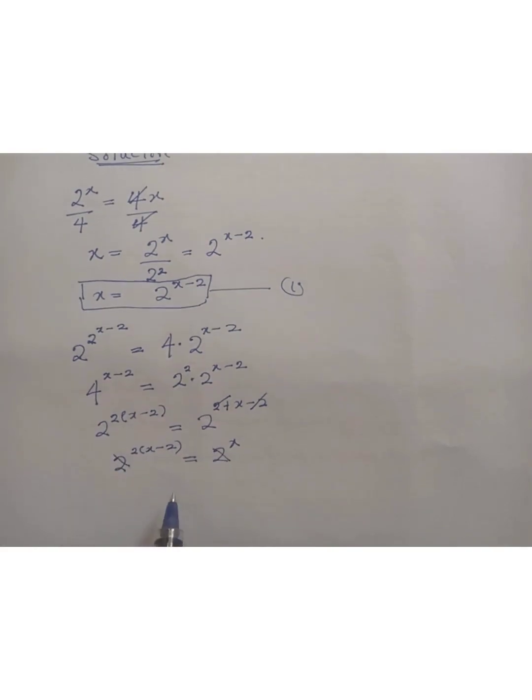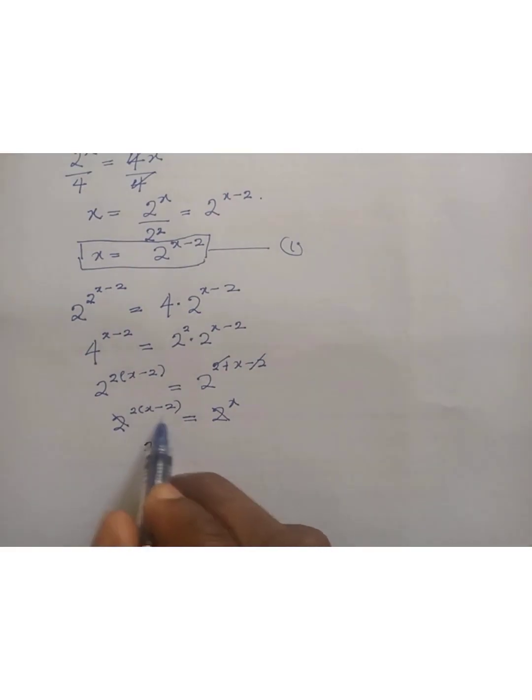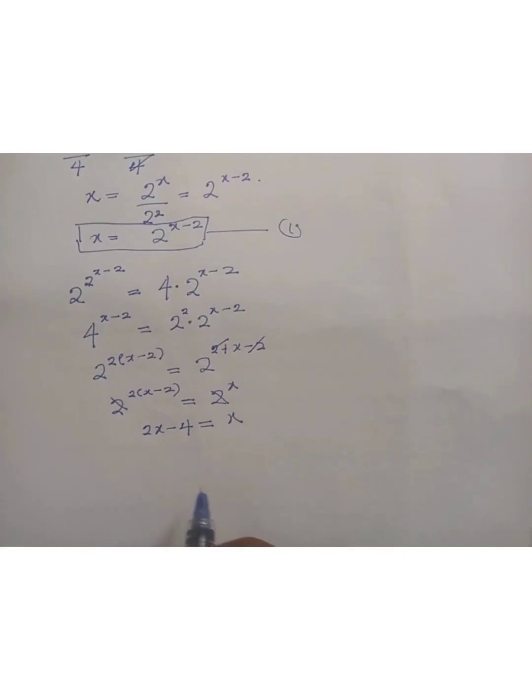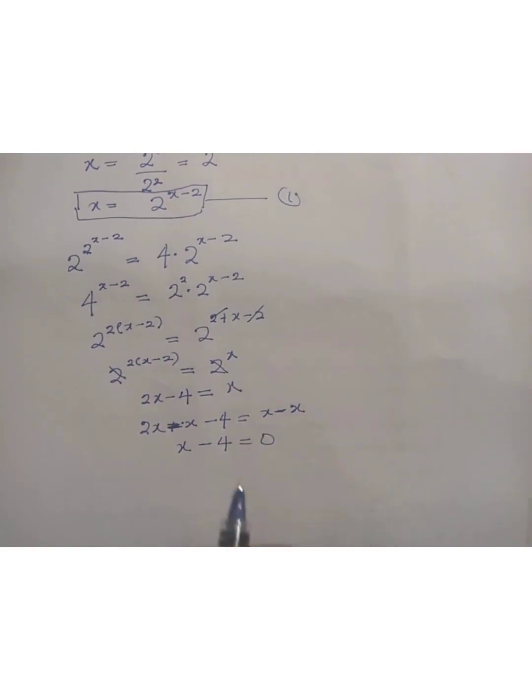Since the bases are equal, the exponents must be equal. So 2(x-2) = x. Opening the bracket: 2x - 4 = x. Subtracting x from both sides: 2x - x - 4 = 0, which gives x - 4 = 0. Therefore, x = 4, which is the required solution.